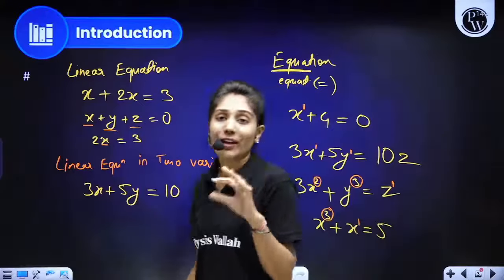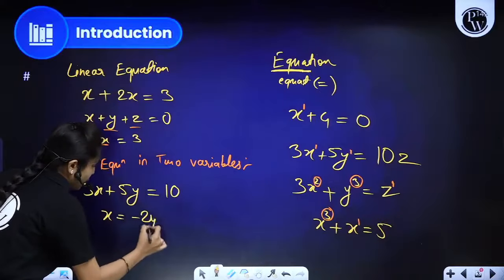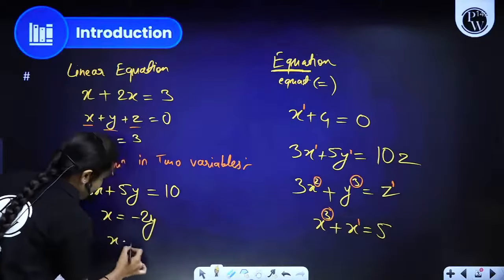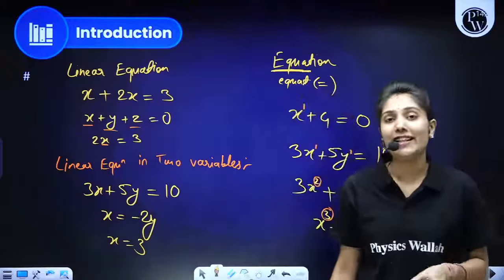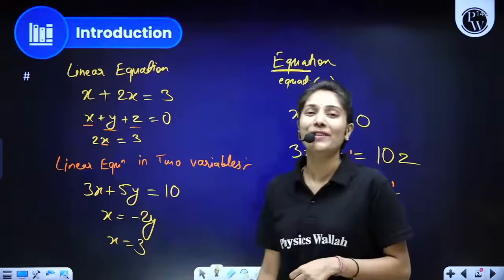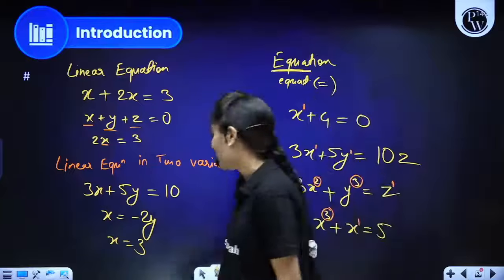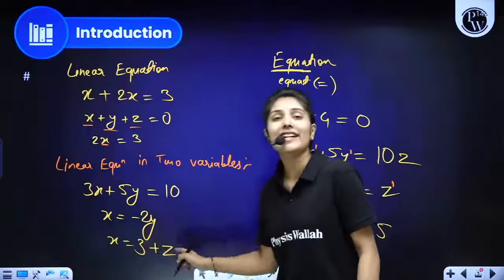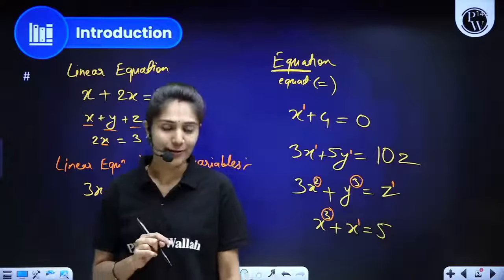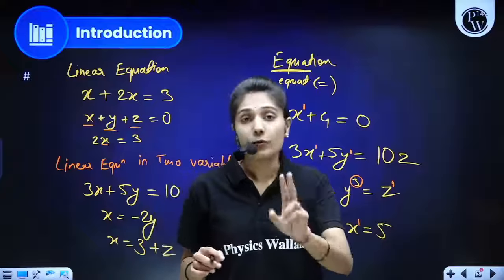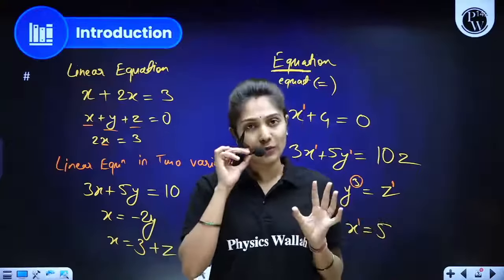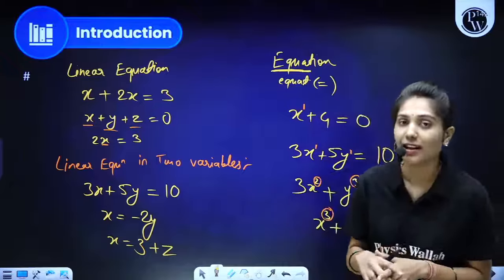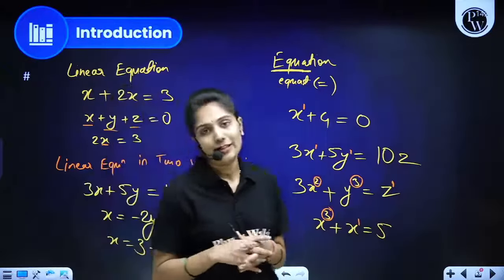Now we come to Linear Equations in Two Variables. The name itself tells us: a linear equation in which two different variables are present. For example, here x and x is the same alphabet — single variable — so that is linear equation in one variable. If there is one x, one y, and one z, that's three variables — linear equation in three variables. Linear equation in two variables would be: 3x + 5y = 10, where x and y are two different variables with highest power one.